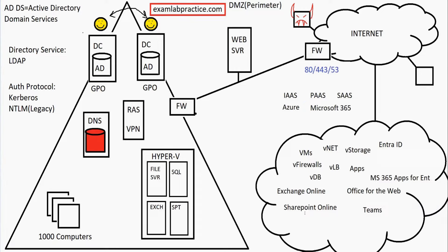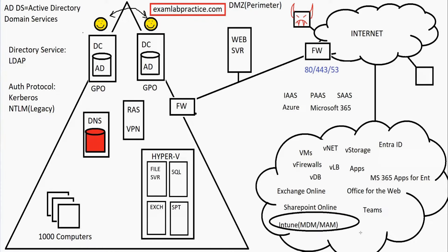We have Microsoft Teams for messaging — same pattern there. We have a product called Intune, which is an incredibly powerful mobile device management and mobile application management product. Intune is what's taking the place of GPOs in the cloud. On-premise, we could control settings and deploy software using GPOs. Now with cloud services, we can use Intune — and we can actually control on-premise machines from Intune as well, making it very powerful. Then we've also got OneDrive for Business, which is cloud-based storage that users can access.